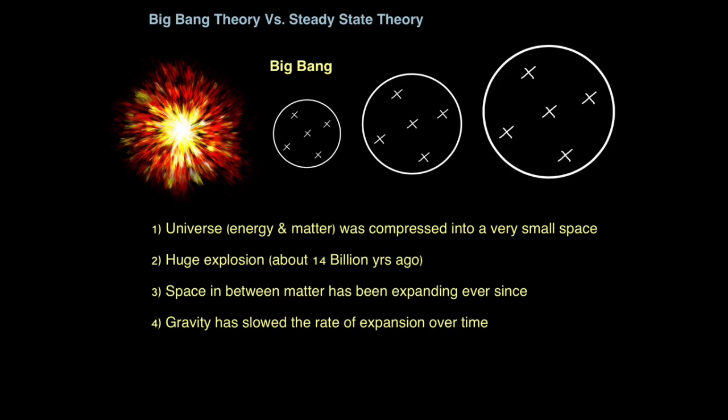Now because of this rate of expansion, we've been able to work out approximately how long ago the Big Bang happened - about 14 billion years ago. However, this isn't perfectly accurate, because we believe gravity, due to all the matter in the universe, has slowed the rate of expansion down over time. So the key points about the Big Bang Theory is no new matter has been created, and a huge explosion about 14 billion years ago has caused the space in between the matter to expand.